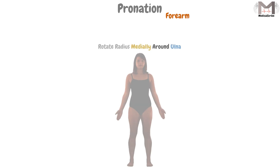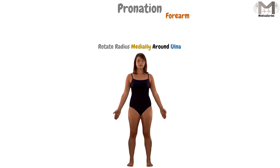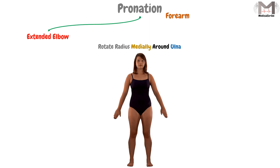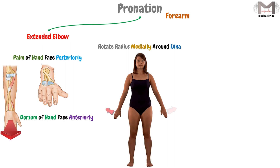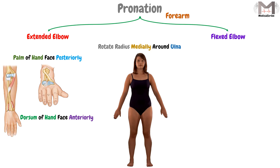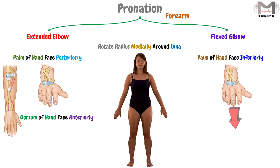In pronation of the forearm, we rotate the radius bone medially around the ulna bone. If we pronate an extended elbow, the palm of the hand will face posteriorly and the dorsum of the hand will face anteriorly. If we pronate a flexed elbow, the pronation of the forearm will make the palm of the hand face inferiorly.